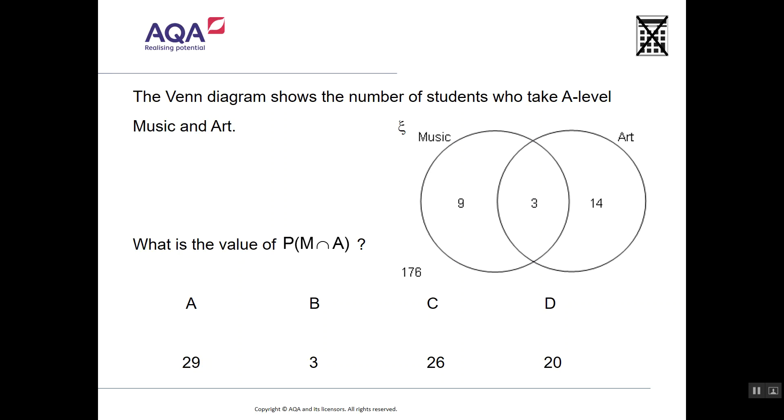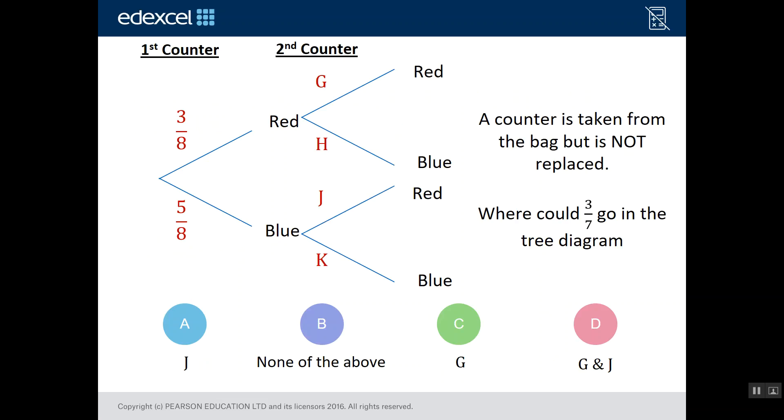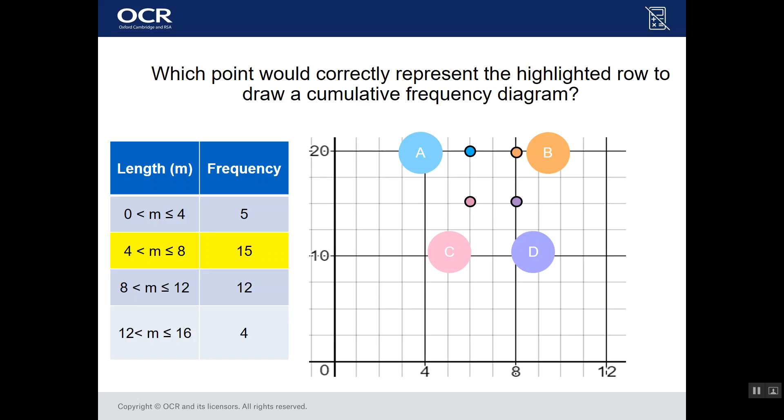And finally some data and statistics. Venn diagram. New specification. Can your students interpret and understand that? Edexcel. One of my favorite questions here. Tree diagrams. Where would three-sevenths go to make that correct? And finally from OCR. Honing right in on the key skills with some cumulative frequency.